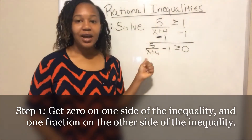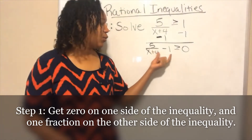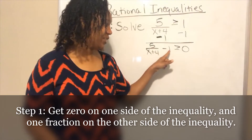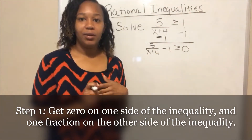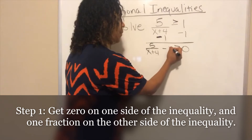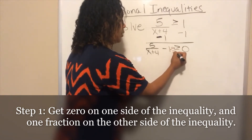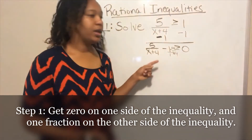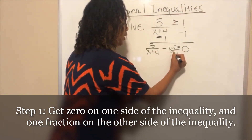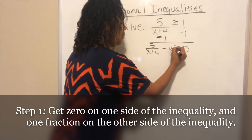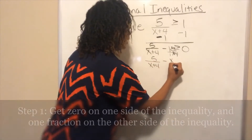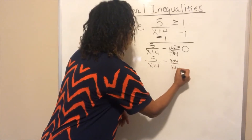Now I need to write the left side as one single fraction. In order to combine this one with the fraction, I need to make it have a denominator of x plus four so they share the same denominator. I can write negative one as negative one over one, then multiply the top and bottom by x plus four. So this becomes five over x plus four minus x plus four over x plus four, greater than or equal to zero.